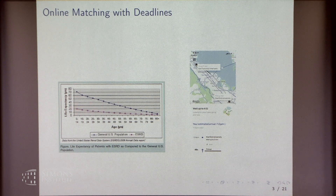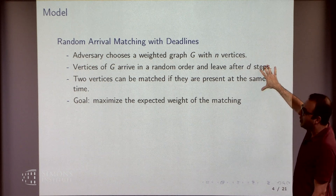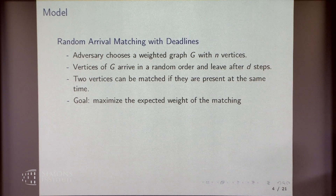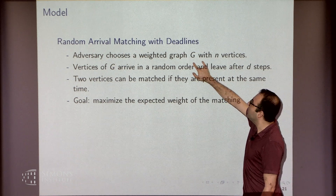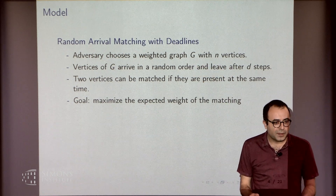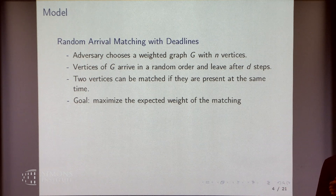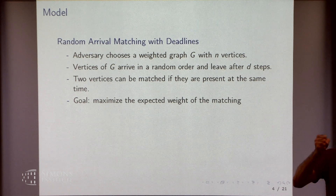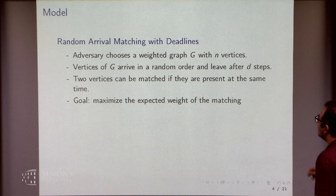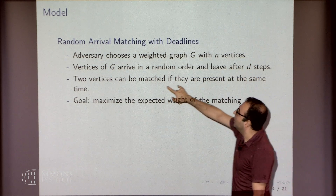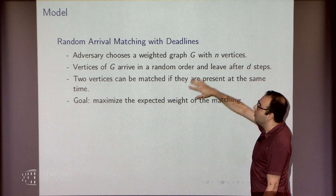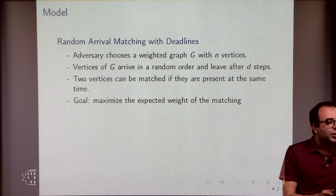I'm going to define a very simple formulation that tries to capture the essence of these problems. We have a graph G with N vertices. The graph is arbitrary. For every pair of vertices there is a weight — the value you gain for matching those two vertices to each other. The weights could be arbitrary, so essentially the adversary chooses that. Once the graph is determined, vertices of the graph arrive in a random order.